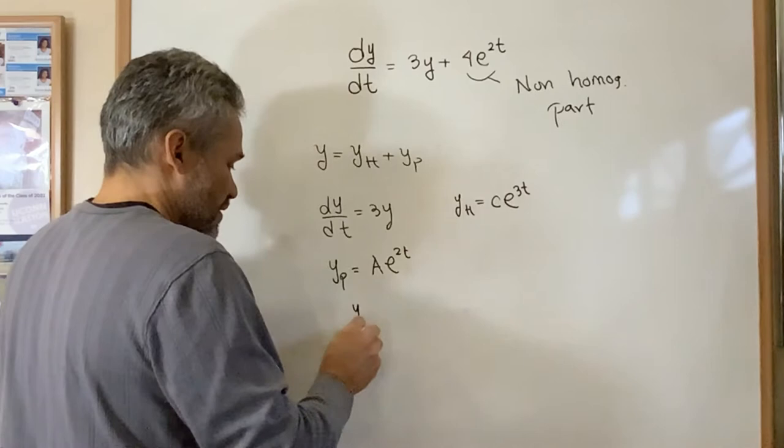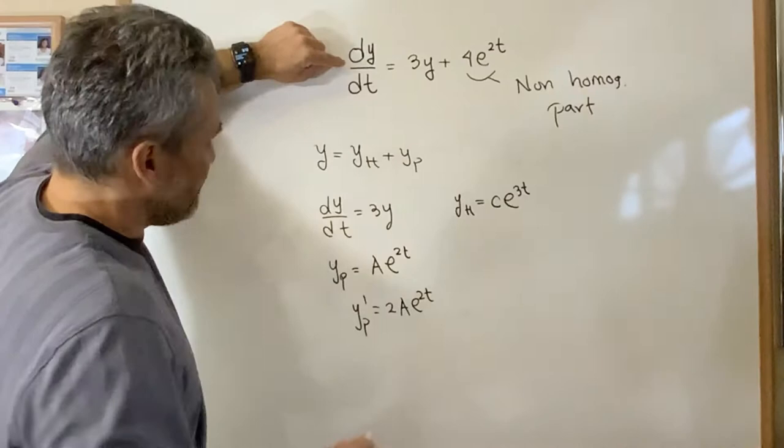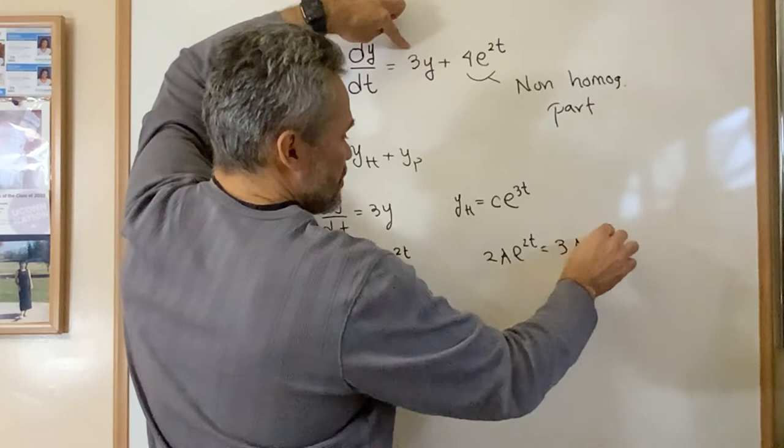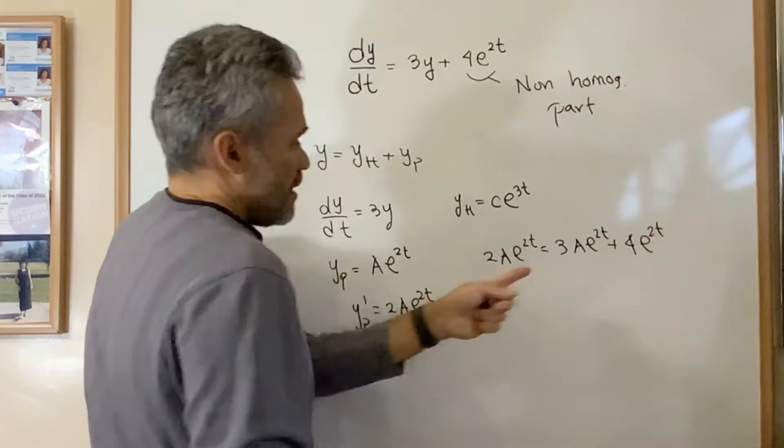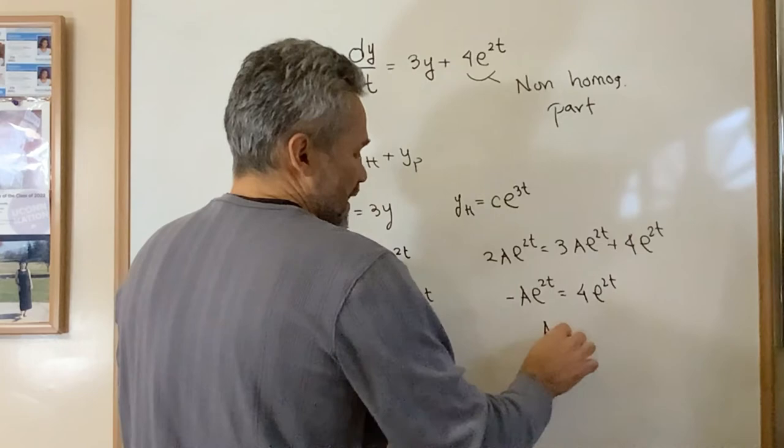We do the derivative and the derivative of this function is 2a e to the 2t. And we replace this in the original equation to find a. The derivative, which is 2a e to the 2t, must be equal to 3 times the function, but this is the function a e to the 2t plus 4e to the 2t. Then when we move this to the left, we get negative a e to the 2t. And from here we get that a is negative 4.